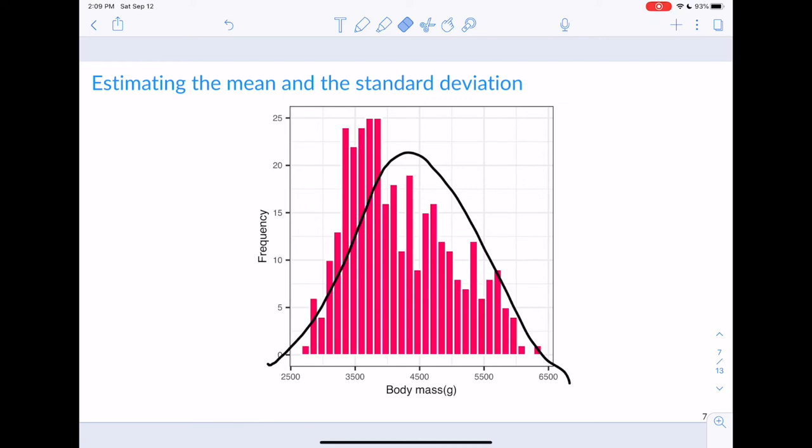And then, we can estimate the standard deviations. So, how do we estimate the mean? Well, if the distribution is symmetric, we want to find the center point. So, if it's the center point, if it's roughly symmetric, the mean is going to be at the center. So, maybe the mean is about 4,400. So, we'll say that that's our sample mean.